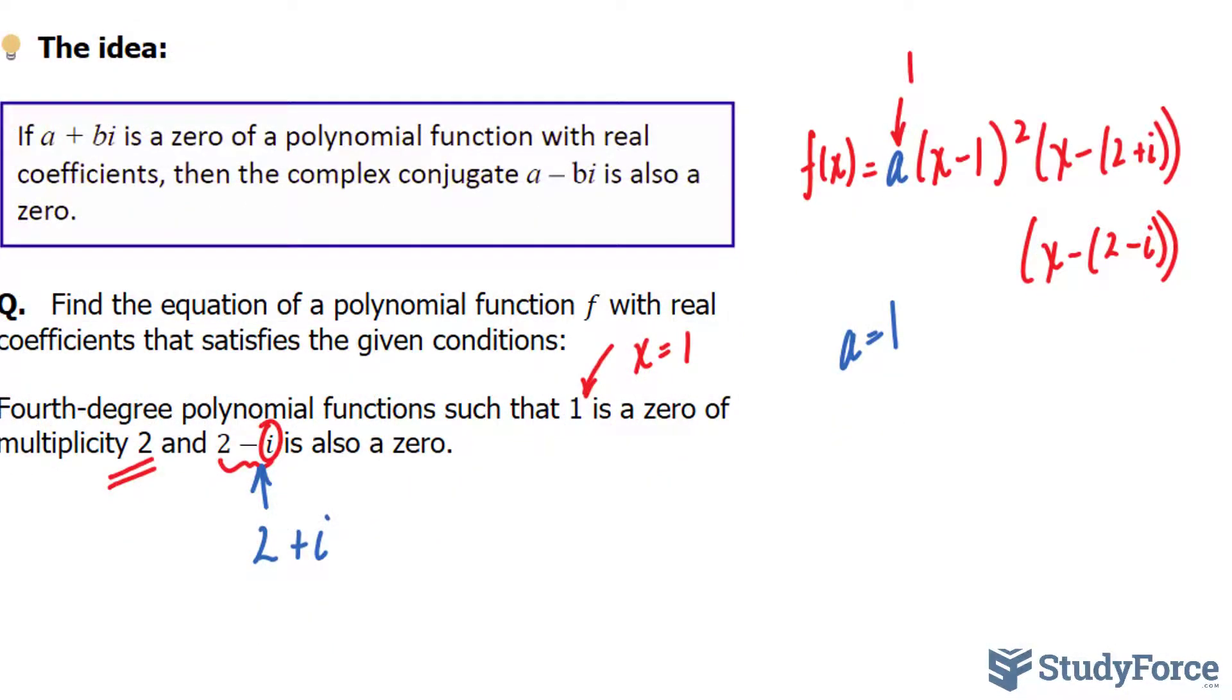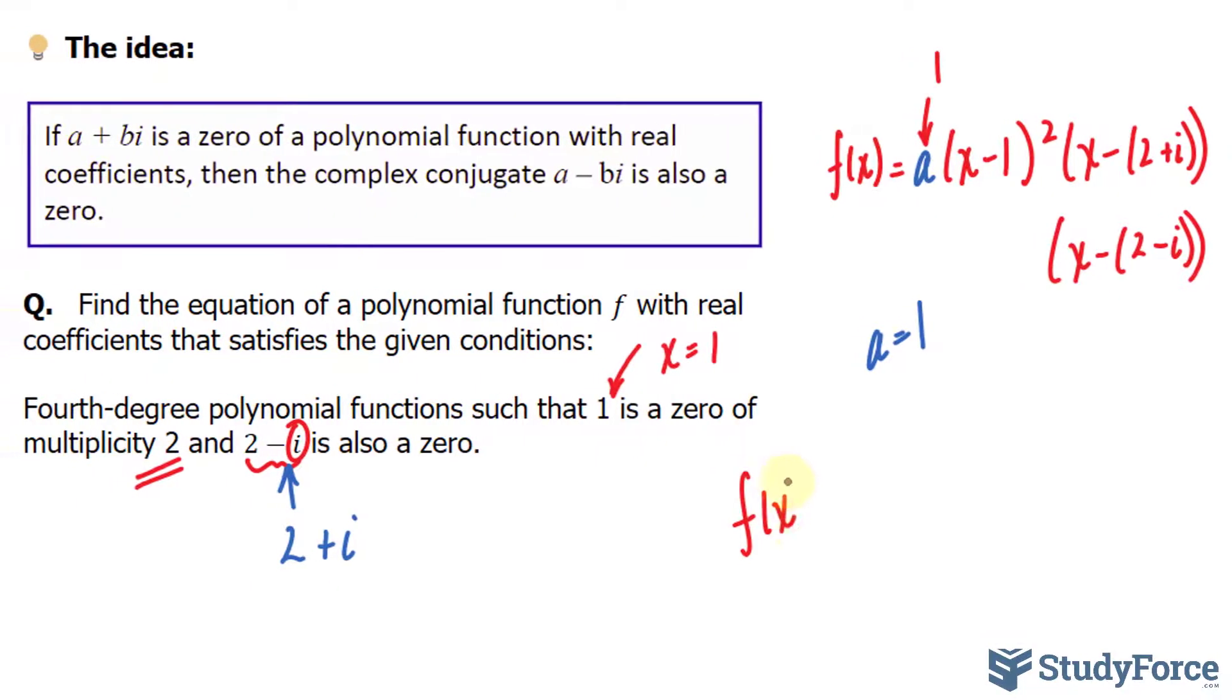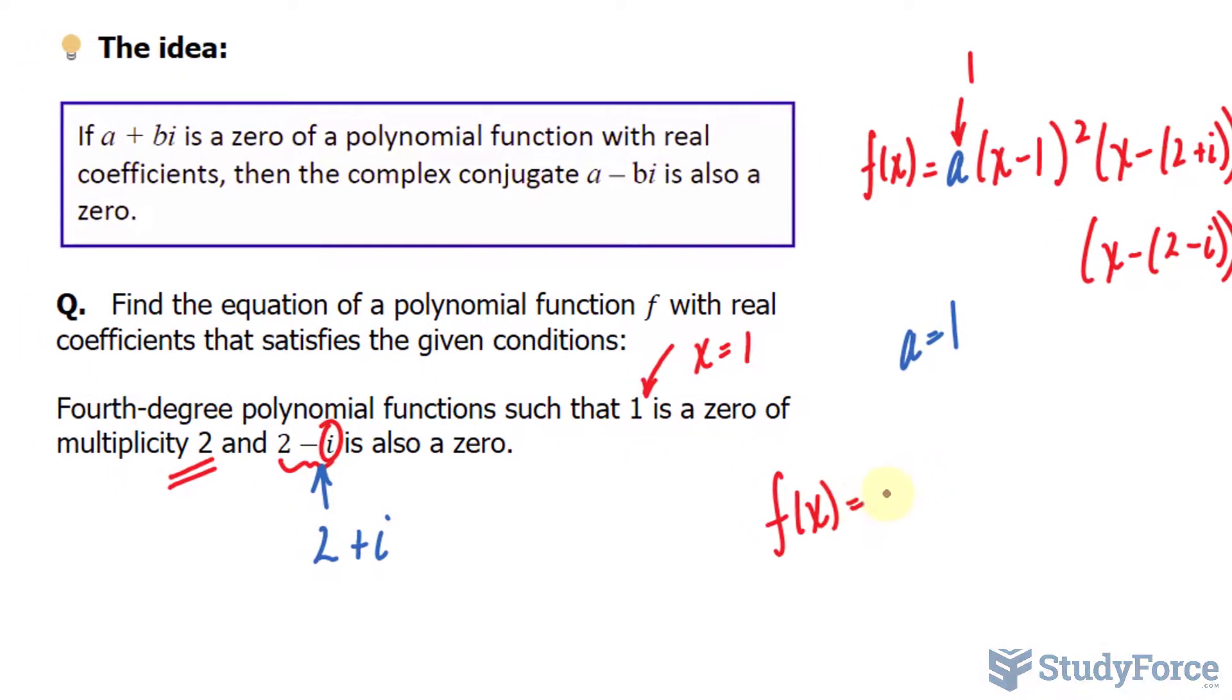If you expand this correctly, you should end up with a function that looks like this. f of x is equal to x to the power of four minus 6x to the power of three plus 14x to the power of two minus 14x, and that constant at the very end is five.